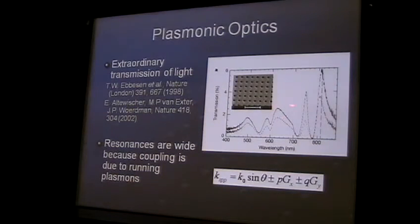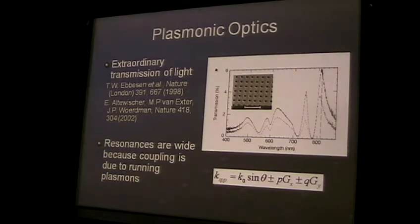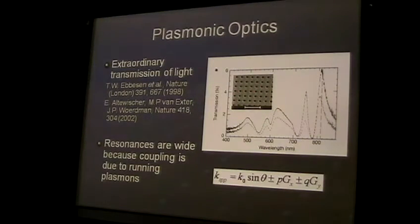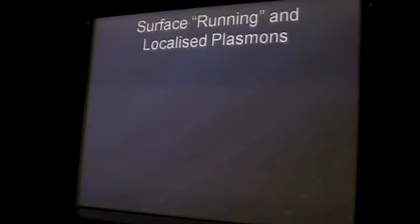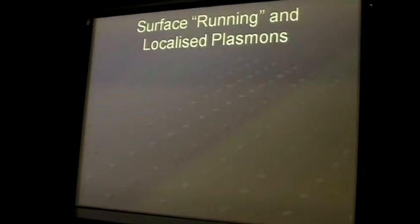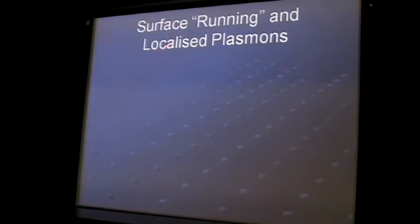It was very interesting because you can have various resonances and various properties of this kind of structure. Playing with the nanostructures inside, you can change this property. That's why I think it generated interest in plasmonic optics. So let me introduce, first of all, what is the difference between surface-running and surface-localized plasmons.